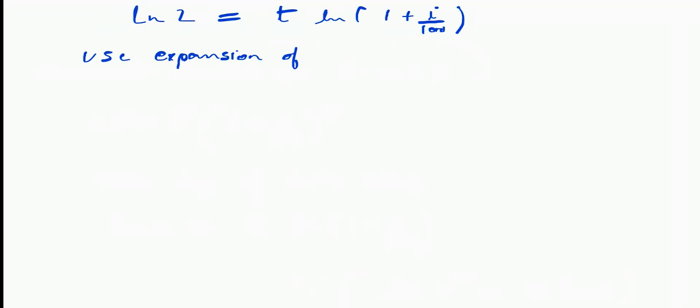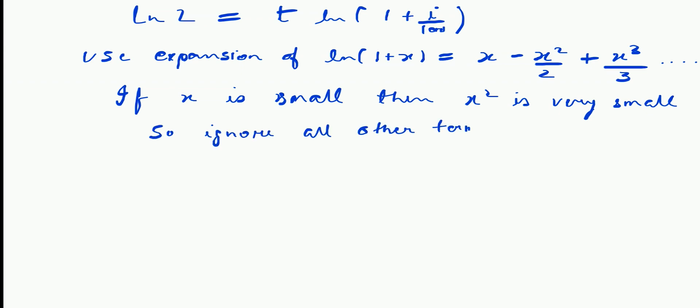Now use the expansion formula of the log. Here, if the value of x is small, then x squared will be smaller and x cube much smaller and so on. So we can ignore the further terms and take only x. So Ln1 plus x can be replaced by just x. Here, our x is i by 100. So equation becomes Ln2 equals t times i by 100.